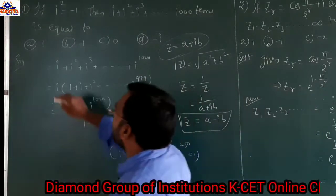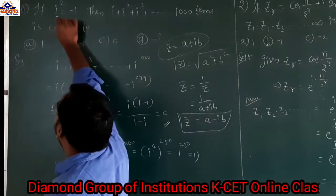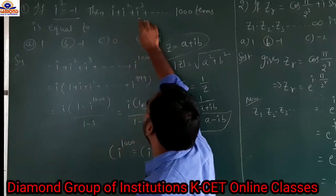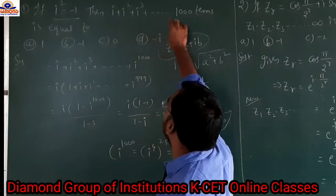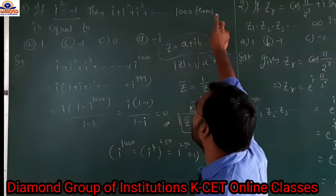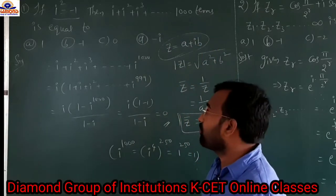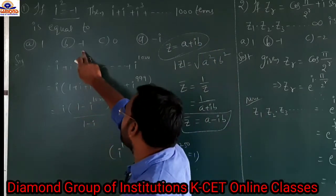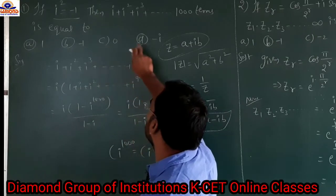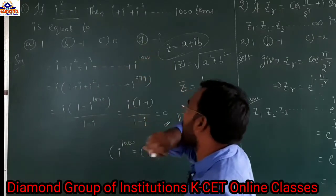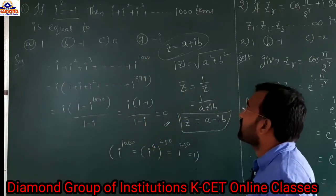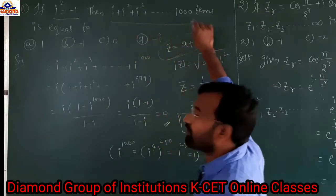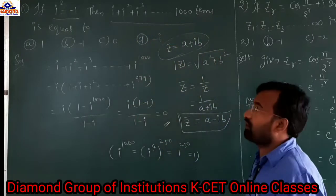See the problem. If i² equals minus 1, then i plus i² plus i³ plus so on up to 1000 terms equals what? Option a: 1, option b: minus 1, option c: 0, option d: minus i. First, take i plus i² plus i³ up to i to the power...